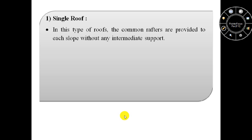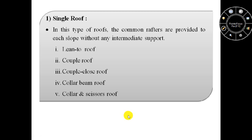Firstly we will discuss the first type of pitch roof, that is single roof. In single roofs, common rafters are provided to each slope without any intermediate support. Single roof has five forms: first is lean to roof, second is couple roof, third is couple close roof, fourth is collar beam roof, and fifth is collar and scissors roof.